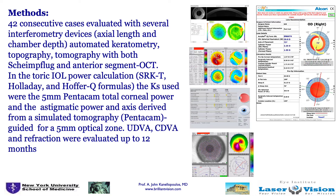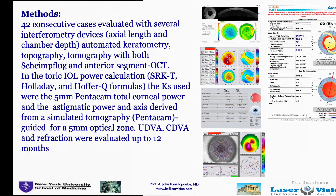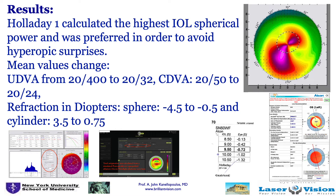We looked at all parameters — uncorrected and corrected vision and refraction for up to 12 months. The Holladay 1 formula calculated the highest IOL spherical power, which is why we preferred it. We had a dramatic improvement in uncorrected visual acuity, which is very rewarding, and dramatic improvement in the myopic refraction and cylindrical refraction of these patients on average.